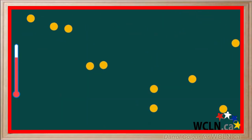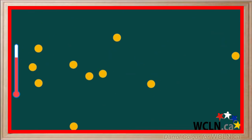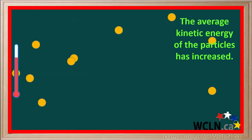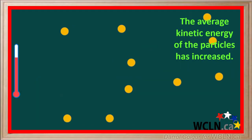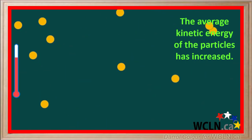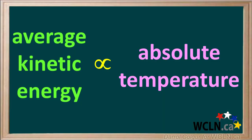We see that with an increase in temperature, the particles are noticeably moving faster. Another way of stating this is by saying the average kinetic energy of the particles has increased. In fact, it's good to know that the average kinetic energy of particles in a sample is proportional to its absolute or Kelvin temperature.